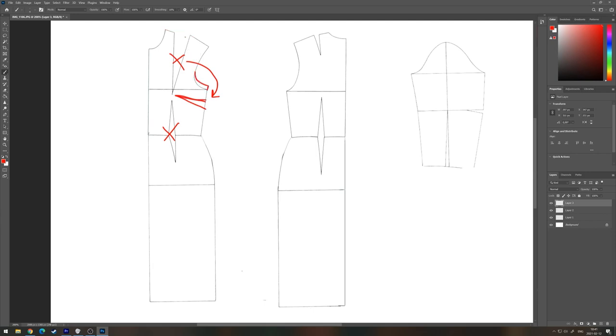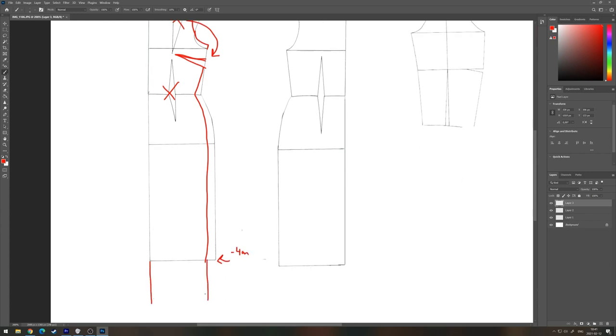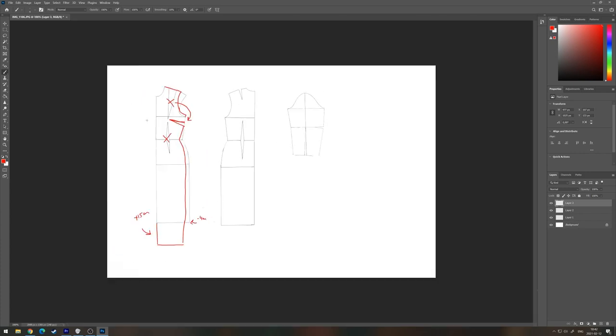When you're taking away the incision that is on the waist, you need to take away from the sides as well. Because we are using very stretchy fabric, you want it to be tight on your body. Also add 15 centimeters extra for the length of the dress.